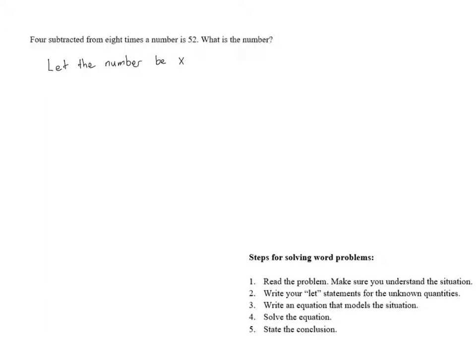Now that we've done step 2, writing our let statements, we need to move on to step 3 and write an equation that models the situation. Let's look at that first sentence. 4 subtracted from 8 times a number is 52. Well, we know that our number is x.